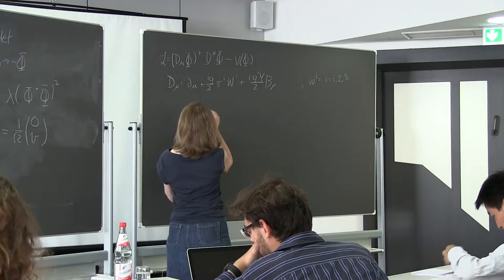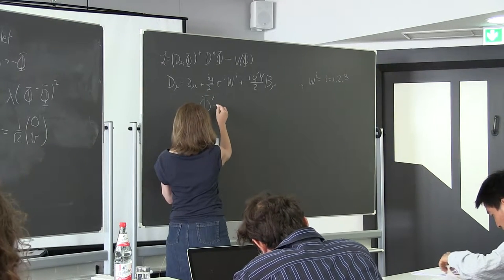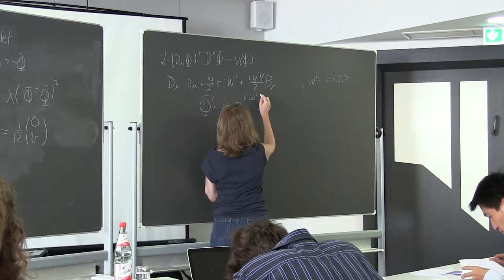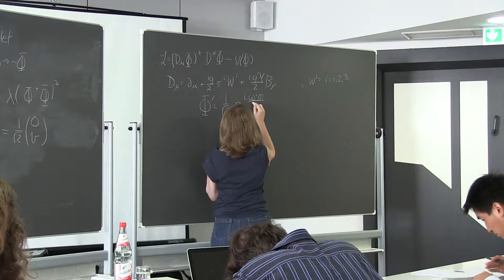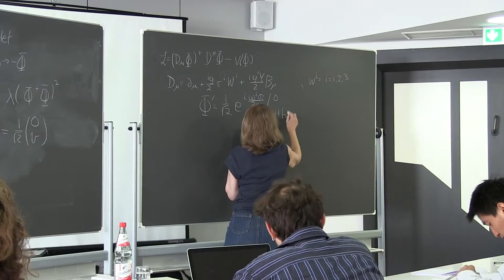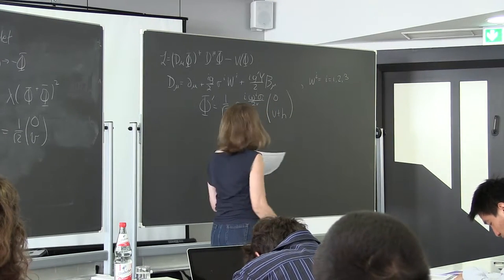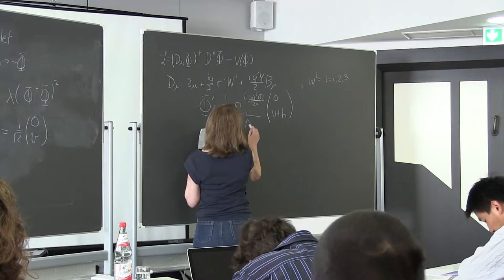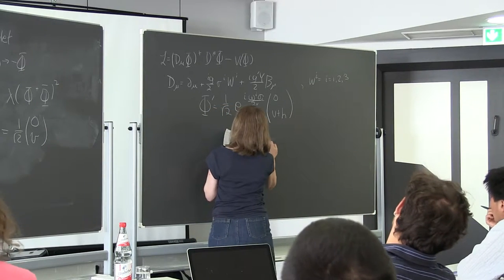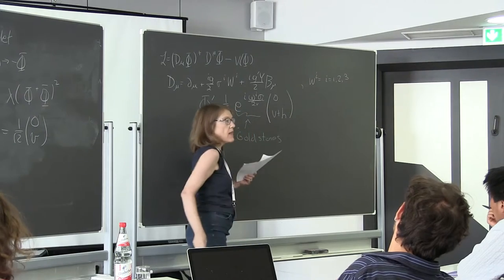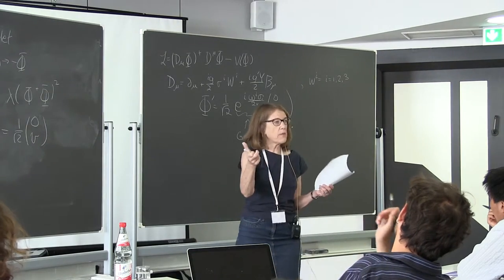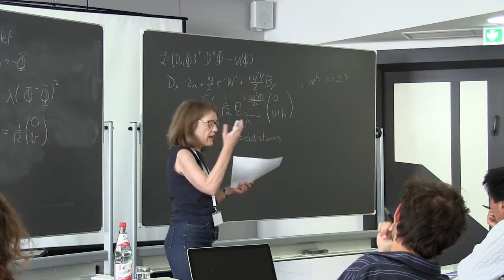Just like in the Abelian case, we write φ' = 1/√2 · e^{i ω_i σ_i/2} (0, v + H). H is your physical Higgs field. The ω_i are the three Goldstone bosons — just like we had one χ before, now we'll have three.